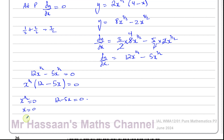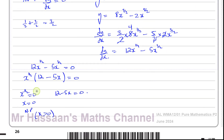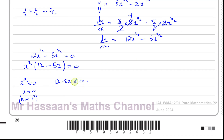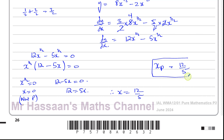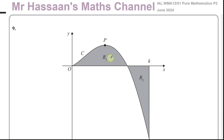This gives either x to the power of a half equals 0, so x equals 0, or 12 minus 5x equals 0. Now x equals 0 is a turning point, but looking at the figure we can see clearly that P is not where x equals 0 — that's a different turning point. So the x-coordinate of P comes from 12 equals 5x, giving x equals 12 over 5. That is the answer to part 9a.